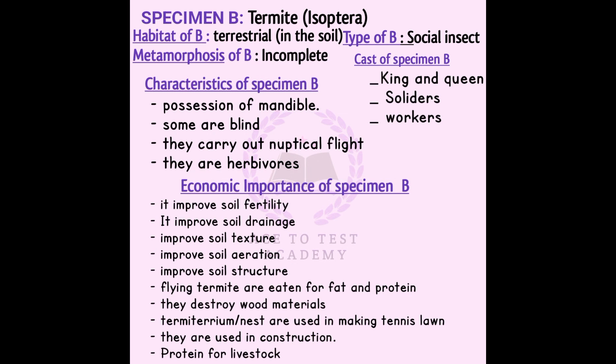There is specimen B, which is termite. The order is Isoptera. It is a terrestrial type of social insect — that is, it has a king and queen, workers, and soldiers. The characteristics of specimen B: it possesses strong mandibles, and some of them are blind.